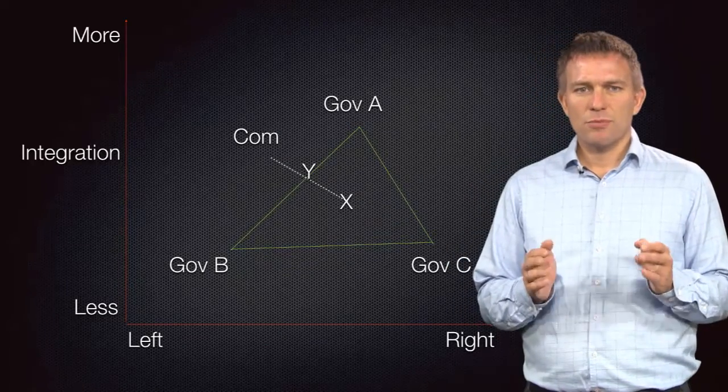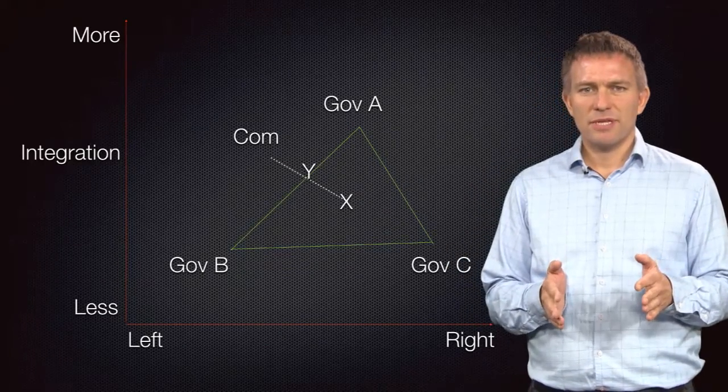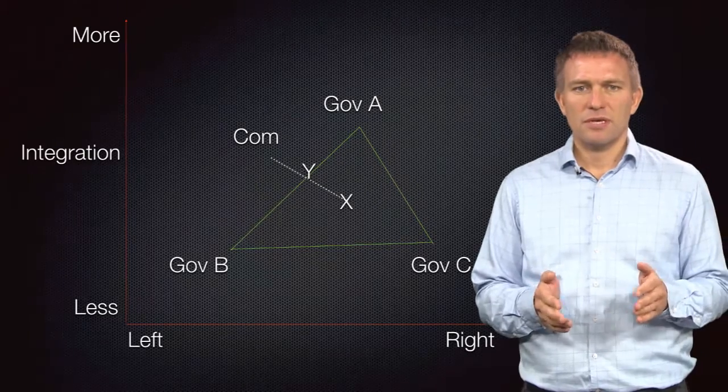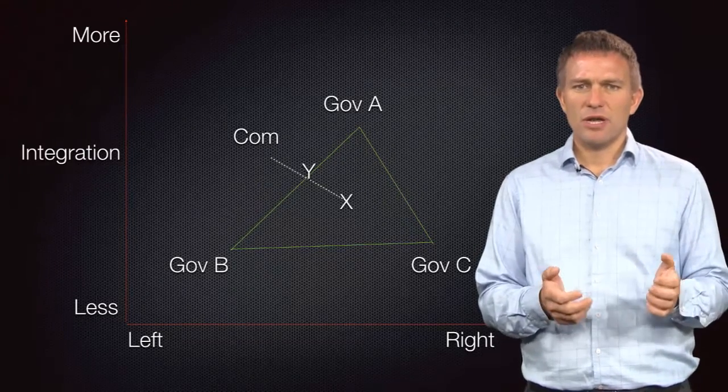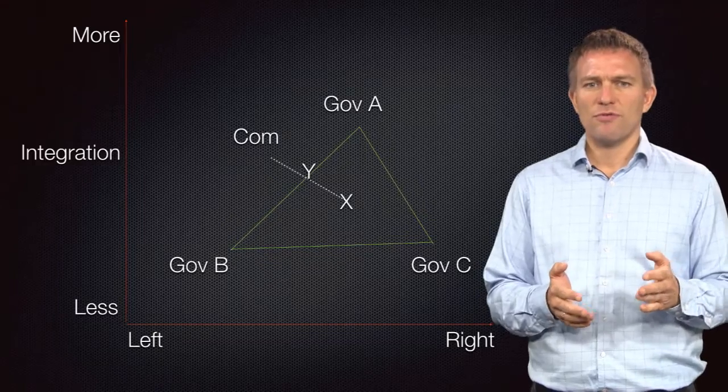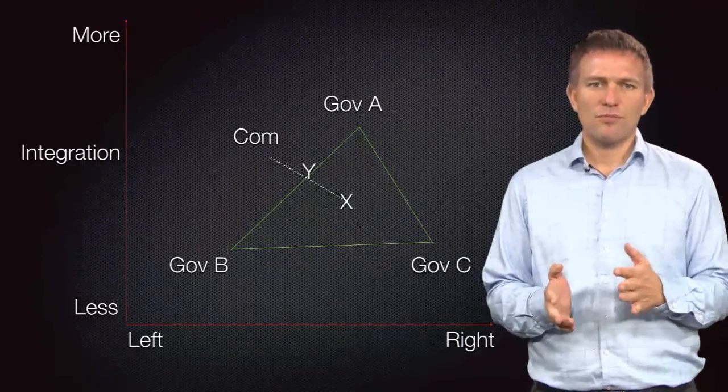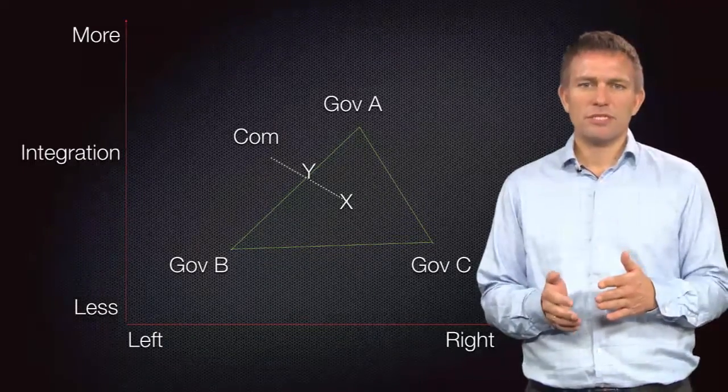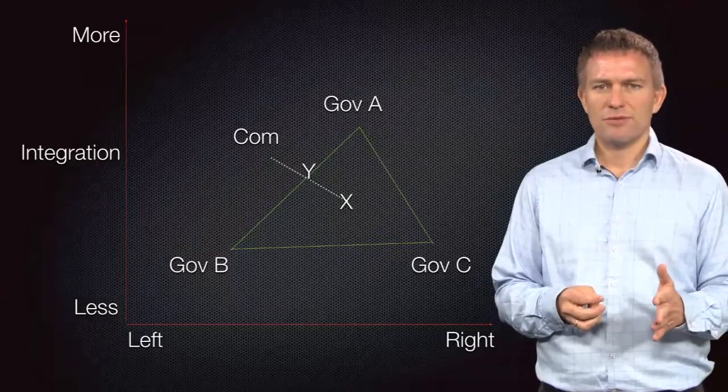Government A wants most integration and is relatively centrist on the left-right dimension. In contrast, Government B is relatively reluctant to integrate and would furthermore prefer leftist policies. Government C is somewhat more integrationist than B, but would like to see right-wing policies adopted.